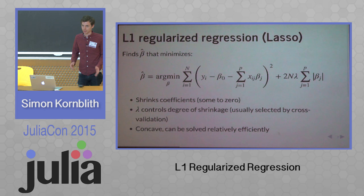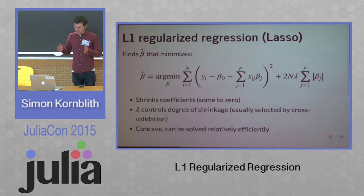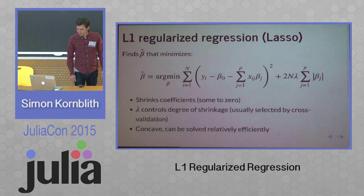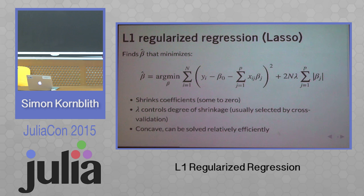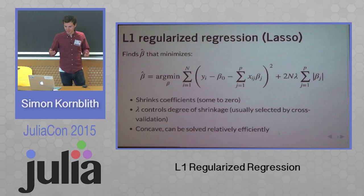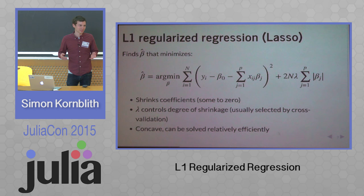While this function is not differentiable when the coefficients are zero, it's concave and can be solved relatively efficiently. [Audience: Why is there a 2? Why is it not absorbed into lambda?] There's a 2 because I tried to make the objective actually fit what I'm using in my code. If you think of it as the log likelihood, there's a factor of 2 in there. You could put it in lambda — it's just that this is actually what the code does if you give it a specific lambda.